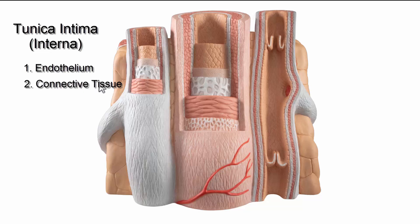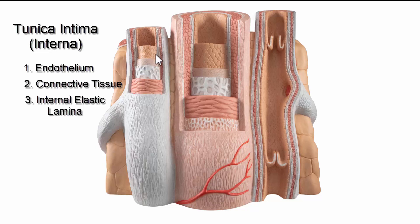One more part of the tunica interna is the internal elastic lamina — in the vein it's going to be a lot thinner. So for the tunica intima we have: the endothelium, the connective tissue and basal lamina, and then the internal elastic lamina.